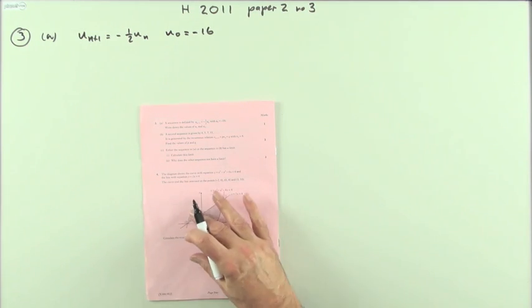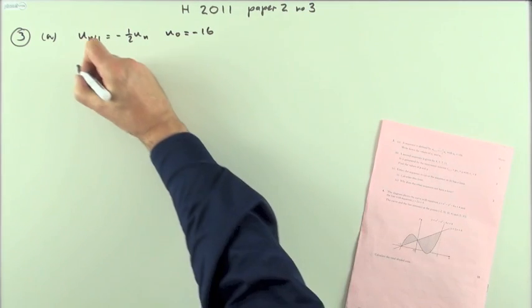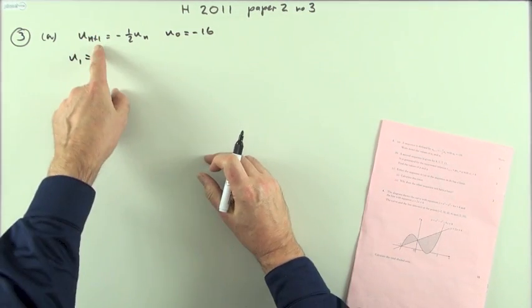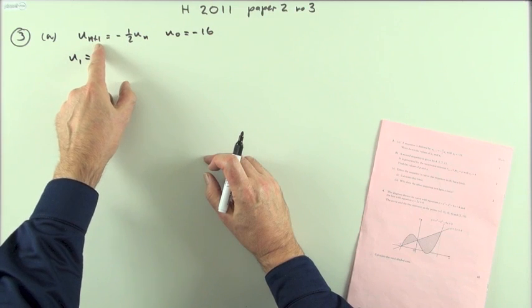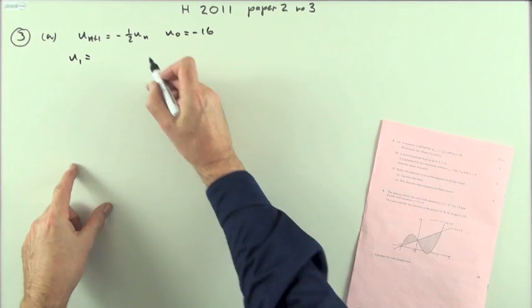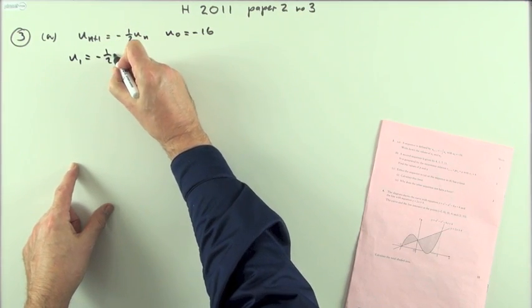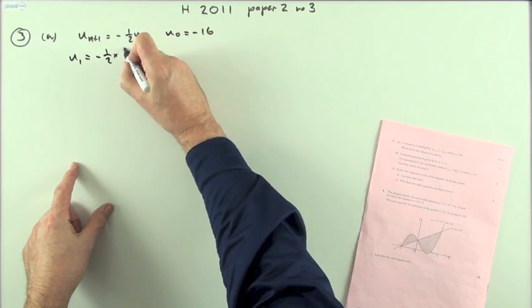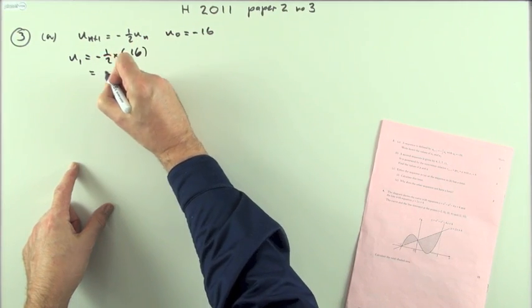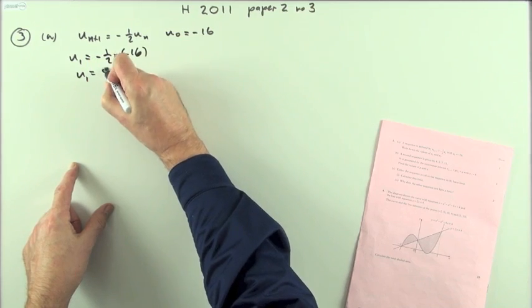Write down the values of U1 and U2. That should be straightforward because this recurrence relation lets you work out the following value. So U1 would simply be negative a half times U0, the previous one which is negative 16, which means that U1 is going to be 8.